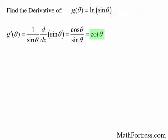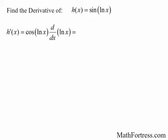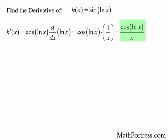For the next one, let's switch the inner and outer functions. Find the derivative of h of x equals sine of the natural log of x. The outer function is sine of x and the inner function is the natural log of x. Taking the derivative of sine gives cosine, evaluated at the natural log of x, multiplied by the derivative of the natural log of x, which is 1 over x. The derivative is equal to cosine of the natural log of x over x.